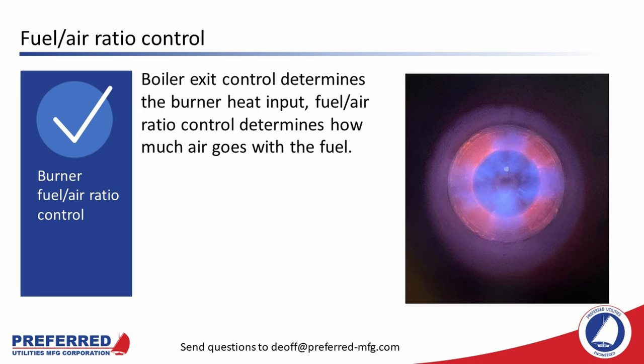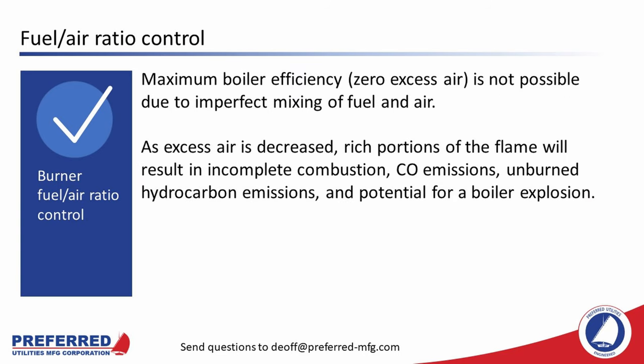Boiler exit control determines the burner heat input; fuel-air ratio control determines how much air goes with the fuel. Pictured at right is a nice-looking flame from a Preferred API low-NOx burner. Maximum boiler efficiency is at zero excess air. However, this is not possible due to imperfect mixing of fuel and air. As excess air is decreased, rich portions of the flame will result in incomplete combustion, CO emissions, eventually unburned hydrocarbon emissions, and the potential for a boiler explosion. Excess air is the largest efficiency loss for most boilers because the air we burn is about 79% inert.